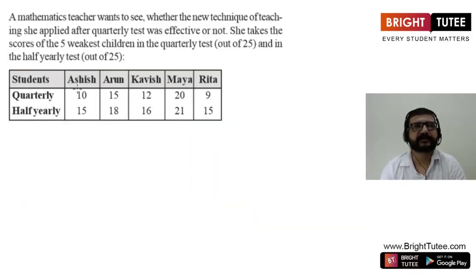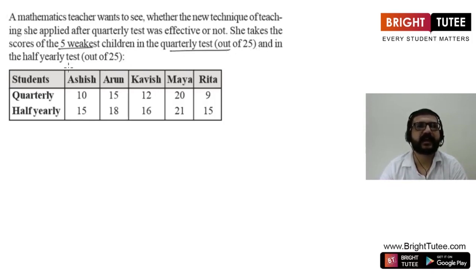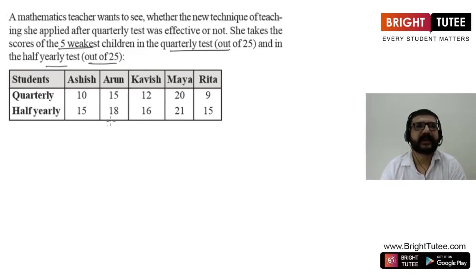For better understanding, let's consider one more question. A mathematics teacher wants to see whether a new teaching technique applied after the quarterly test was effective. She takes scores of 5 weakest children in the quarterly test out of 25 and in the half-yearly test out of 25. This table shows marks of those 5 students in quarterly and half-yearly. For this comparison we should draw a double bar graph.